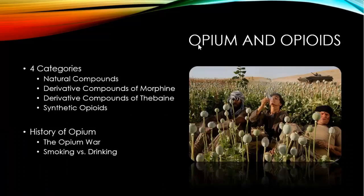There are four categories of opioids. The first category comprises three natural compounds directly extracted from opium itself: morphine, codeine, and thebaine. All opioid derivatives have their origin in these compounds.